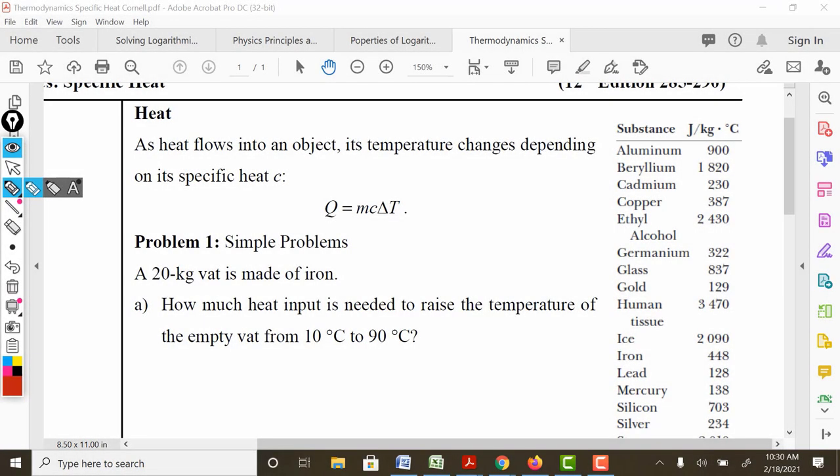As heat flows into an object, its temperature changes depending on its specific heat and also its mass. So this is capital Q, the symbol for heat. Remember that heat has a unit of joules. Then we have C, which is its specific heat.